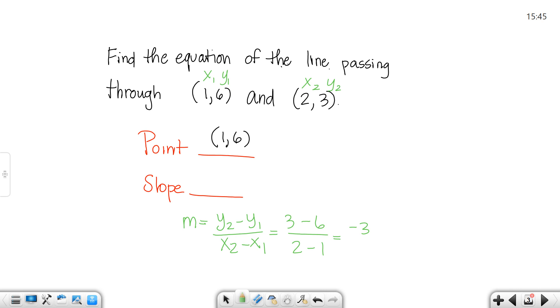So, I get negative 3 over 1, so my slope is negative 3. Watch that sign. So, I've got the point. I've got the slope.